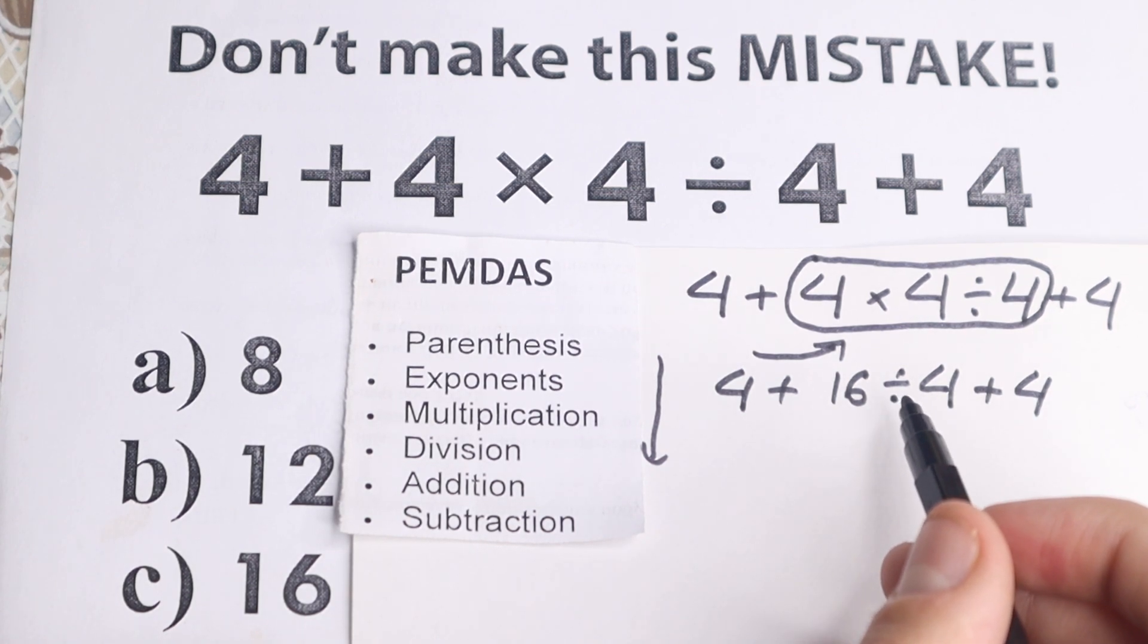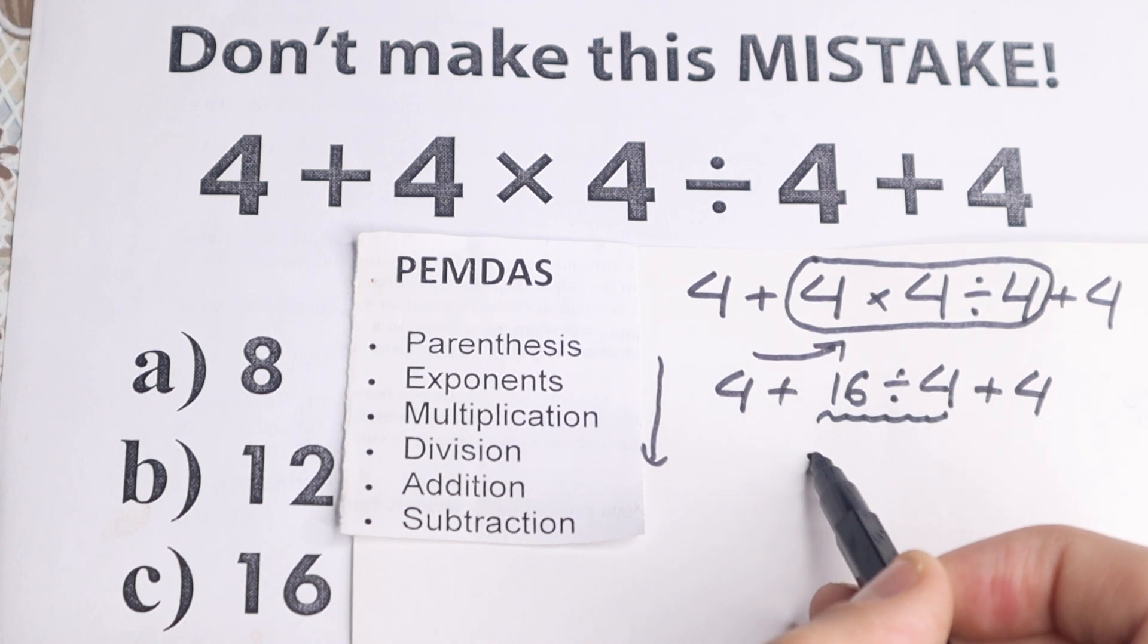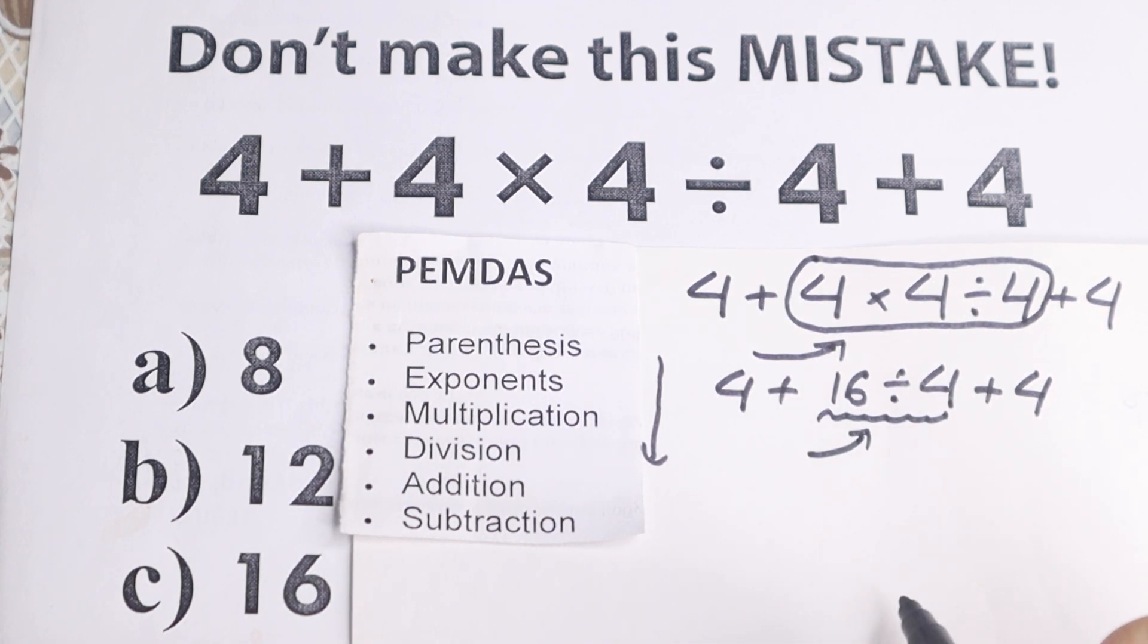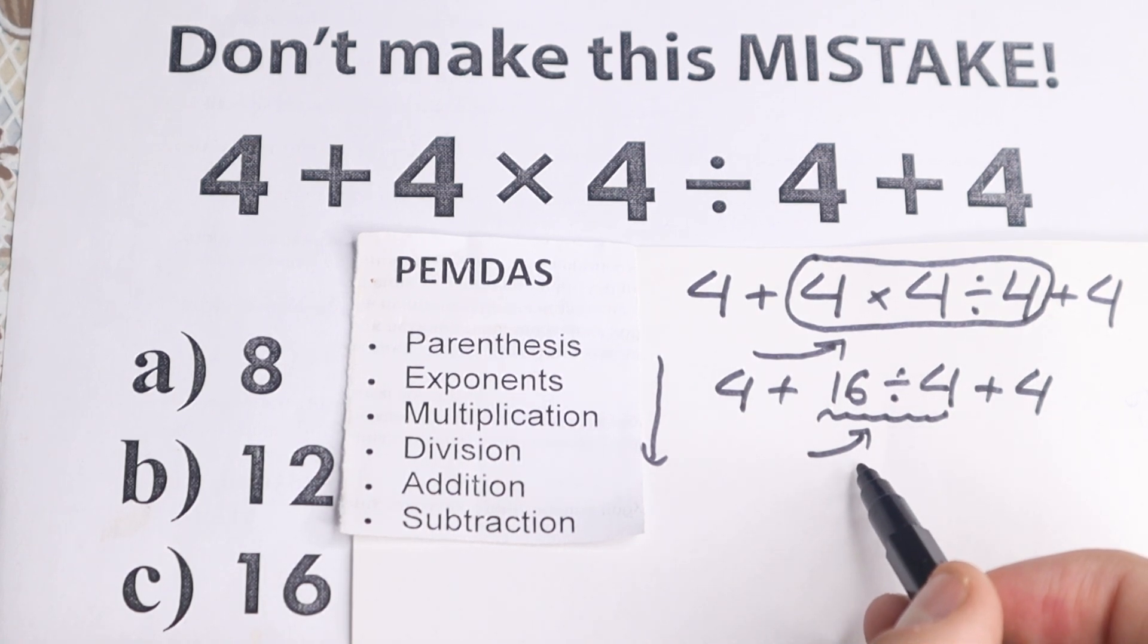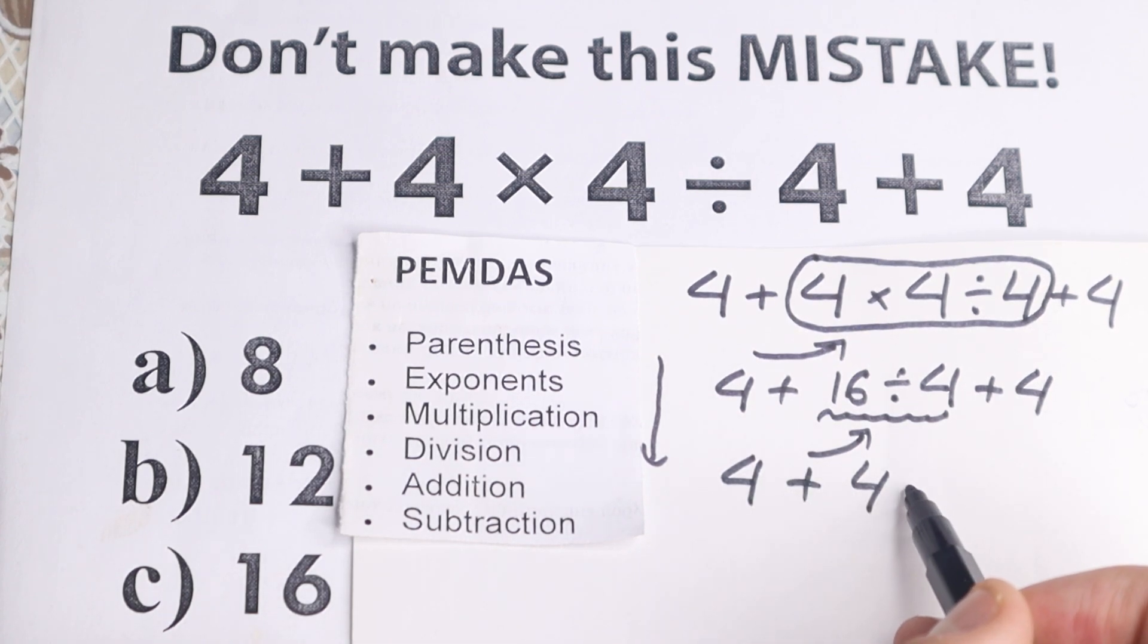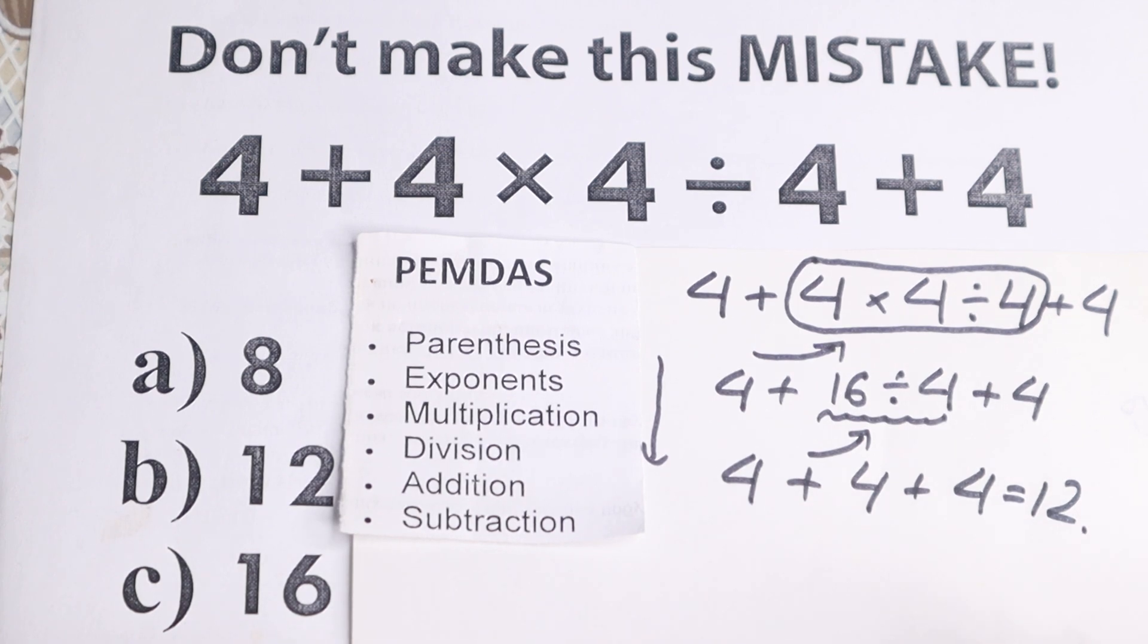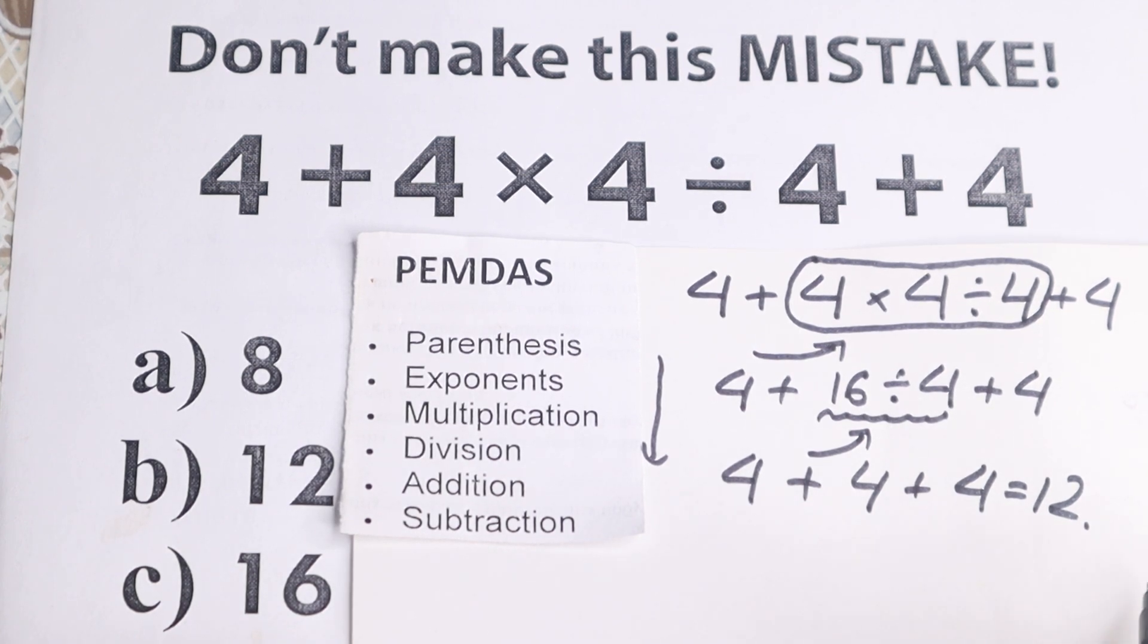Then we need to scan what is the first sign from left to right, because we still have this division part. So the first sign and only one sign is this division, so 16 divided by 4 equal to 4. So we have like 4, in the beginning 4, so 4 plus 4 plus 4 equal to 12. This is a solution to this problem, according to PEMDAS, of course.